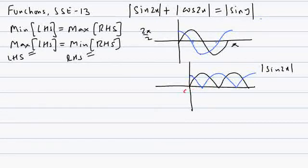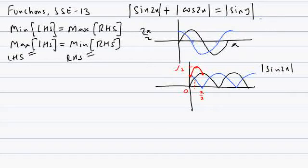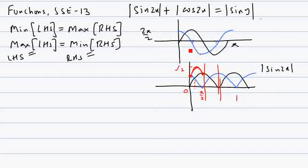Now looking at the sum of the two graphs: at x = 0, |sin 2x| = 0 and |cos 2x| = 1, so the sum is 1. At x = π/2, the sum is also 1. At the point where the two are equal, both equal 1/√2, so the sum is 2/√2 = √2. So the graph goes up to √2 and comes back down, repeating with period π/2.